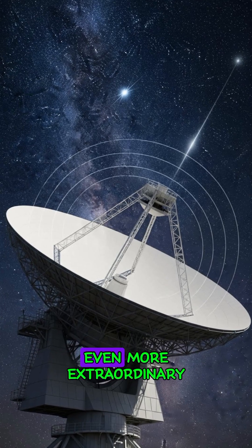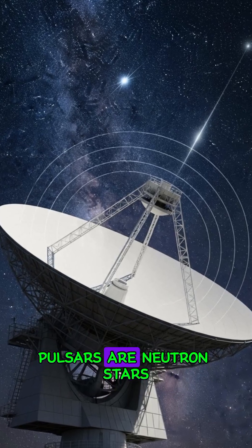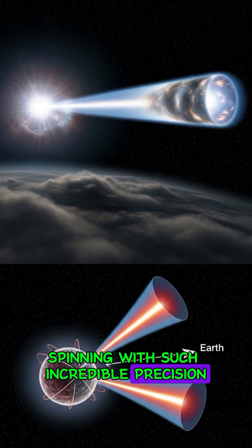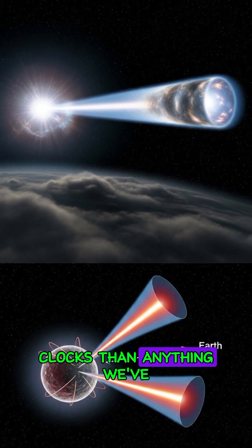But the reality is even more extraordinary. Pulsars are neutron stars compressed to just 20 kilometers across, spinning with such incredible precision that they make better clocks than anything we've built on Earth.